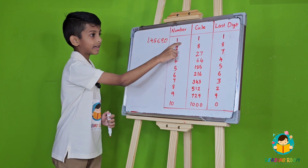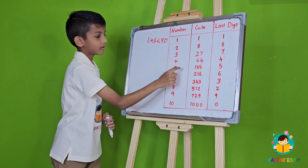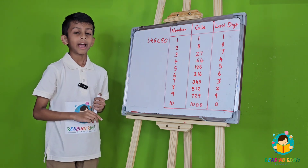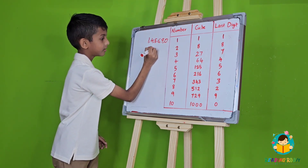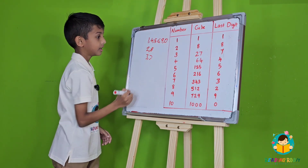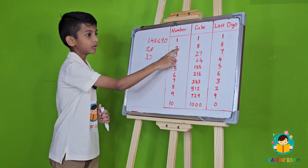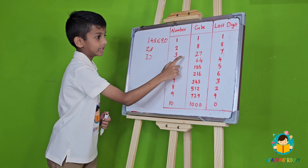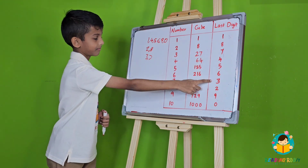1 ends with 1, 4 ends with 4, 5 ends with 5, and so on. And for the numbers 2 and 8, and 3 and 7, the last digit flips. So for 2 it is 8, for 8 it is 2, 3 is 7, and 7 is 3.